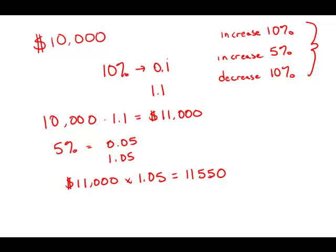Now, a decrease by 10%. Now, of course, 10%, again, as a decimal, is 0.1, but this is negative. So, 1 minus 0.1 is 0.9. That is the multiplier for a decrease by 10%.